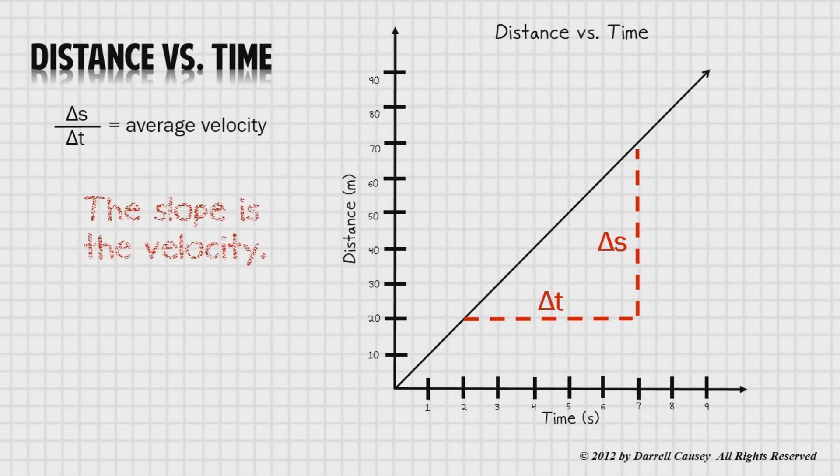Slope is the velocity. And since velocity is constant, and you notice it's constant because it's nice and straight, that means there's no acceleration. If velocity is constant, there is no acceleration, because acceleration is the change in velocity.